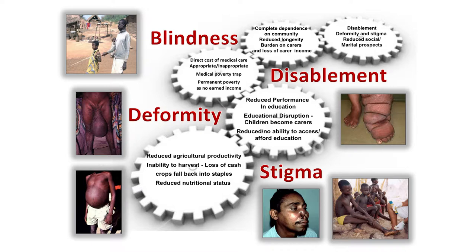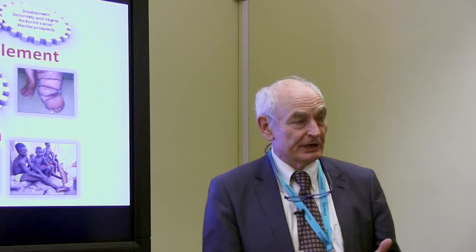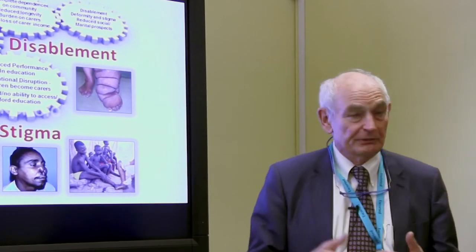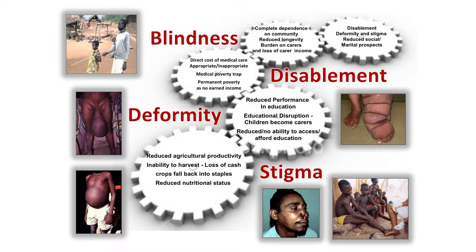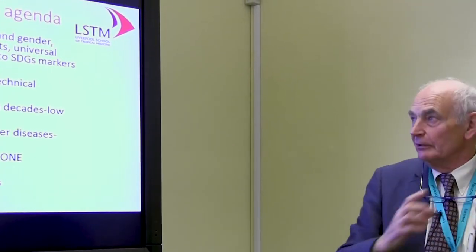The reason I show this slide is because the impacts are not just on the disease — they're social impacts on marital prospects, issues around the burden on carers who have to look after disabled people, and if they're children, they're deprived of education so their life prospects are deeply affected. Those children also have less educational performance, and people who are disabled can't work so they can't afford to send their children to school. The impact on agricultural productivity because you can't farm is profound — you have an impact on nutritional status and people fall back on staples instead of cash crops, creating problems in nutritional diversity. This slide is designed as a cog because it shows the interactions between all these issues.